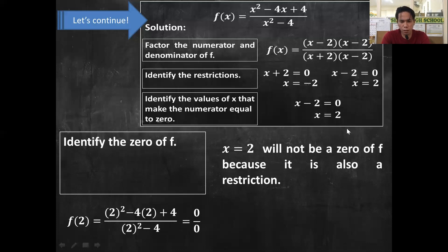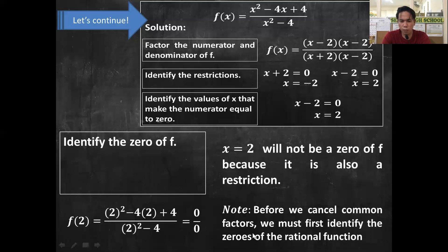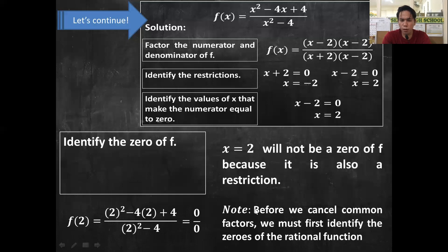Before we end, take note that before we cancel common factors, we must first identify the zeros of the rational function. For example, the function (x² − 4x + 4) / (x² − 4) factors as (x − 2)(x − 2) / [(x + 2)(x − 2)]. You could cancel the common (x − 2) factors, but that would give a different answer. So we must first identify the zeros of the rational function before canceling common factors.